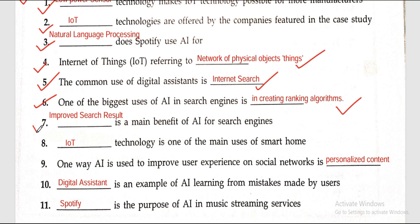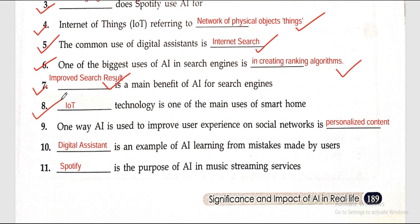Question seven: dash is a main benefit of AI for search engines. The accurate answer is improved search results. Question eight: dash technology is one of the main uses of smart homes. The accurate answer is IoT. Question nine: one way AI is used to improve user experience on social networks is personalized content.